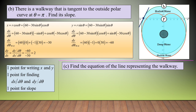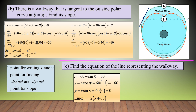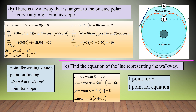Part C asks for the equation of the line representing the walkway. At θ = π, R1 = 60 − 30 sin π = 60. Converting to rectangular: x = 60 cos π = −60 and y = 60 sin π = 0, giving the point (−60, 0). Using point-slope form with slope 2, the equation of the line is y = 2(x + 60). Two points: one for finding R, and one for the equation.